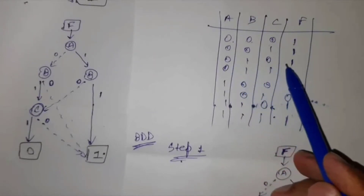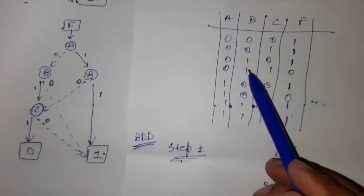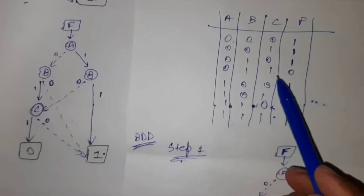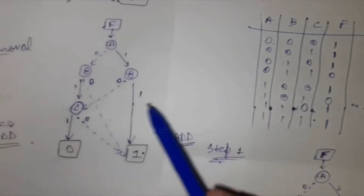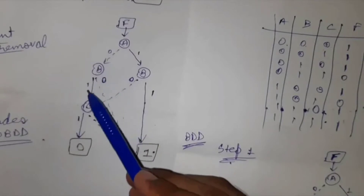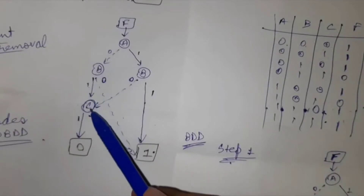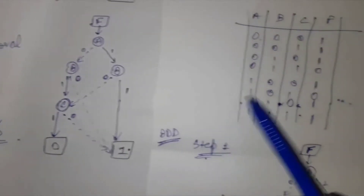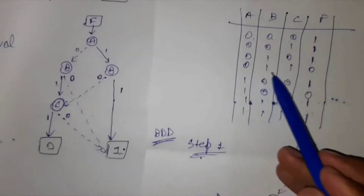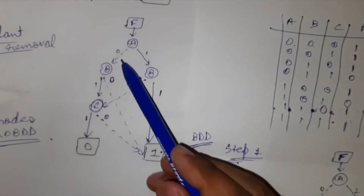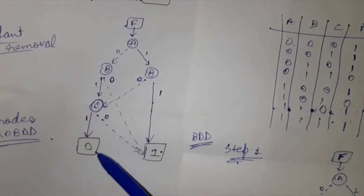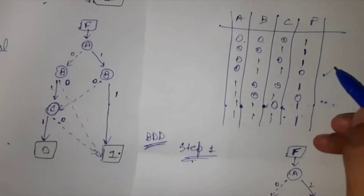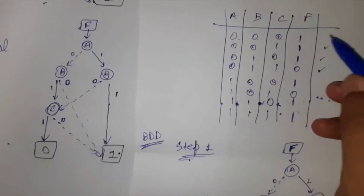Then, 0, 1, 0 gives 1 and 0, 1, 1 gives 0 — these values are different, so we will check one by one. For 0, 1, 0 we get 1. Third row is also checked. Then the fourth one: 0, 1, 1 gives 0. Perfect. Four rows have been checked.